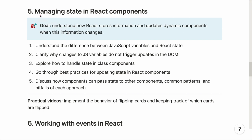We then come to section five, where we start managing state in React components. Our goal is to understand how React stores information and updates dynamic components when this information changes — one of the fundamental building blocks of working with React. We spend a lot of time understanding the difference between JavaScript variables and React state, clarifying why changes to JavaScript variables do not trigger updates in the DOM by default, how to handle state in class components, best practices for updating state, and how components can pass state to other components. In the practical videos, we focus on implementing card flipping in our memory game.